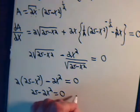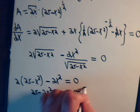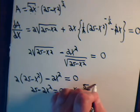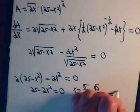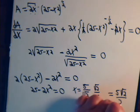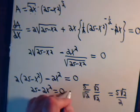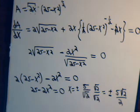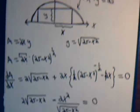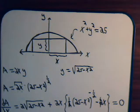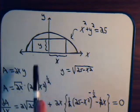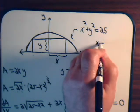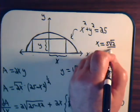So x comes out to be equal to 5 divided by the square root of 2. Or we can rationalize: 5 times the square root of 2 divided by 2. It would actually be plus or minus that, so we'll just take the positive value. So x equals 5 times the square root of 2 over 2.